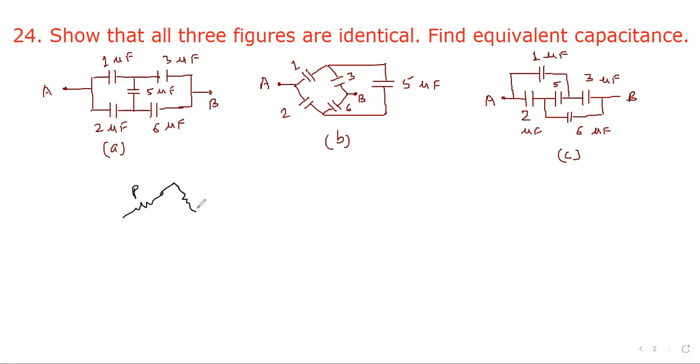And there is another resistance. If p upon r is equal to q upon s, then the middle resistance is removed. The same is true here.